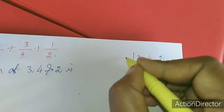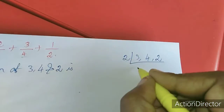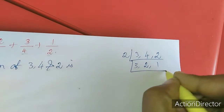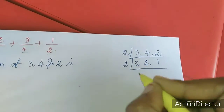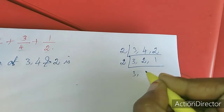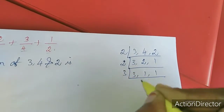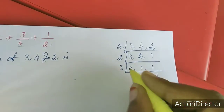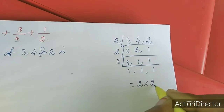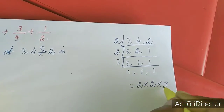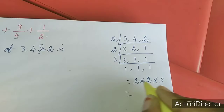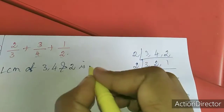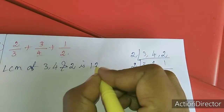3, 4, 2. 2 table: 3 will come, 2, 1. Again 2 table: 3, 1, 1. 3 table: 1, 1, 1. So LCM equals 2 into 2 into 3. 2 twos are 4, 4 threes are 12, so we have the LCM 12.